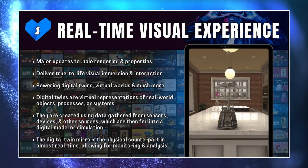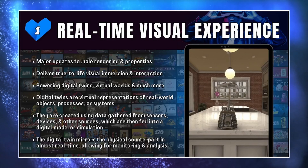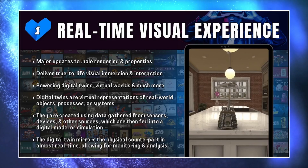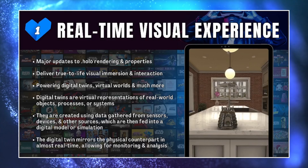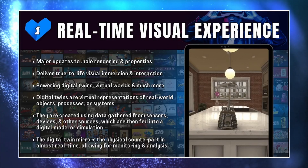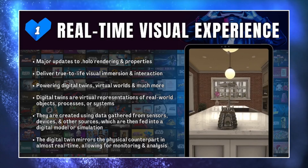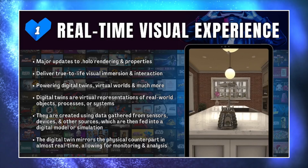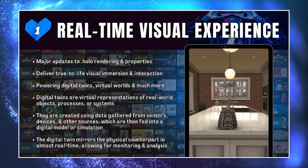The first update listed in the article is real-time visual experiences. They made major updates to their hollow rendering and property settings, which delivers true-to-life visual immersion and interaction, powering digital twins, virtual worlds, and much more. Digital twins are virtual representations of real-world objects, processes, or systems, created using data gathered from sensors, devices, or other sources fed into digital models or simulations — for example, creating your own room to track stocks, mirroring the physical counterpart in near real time.